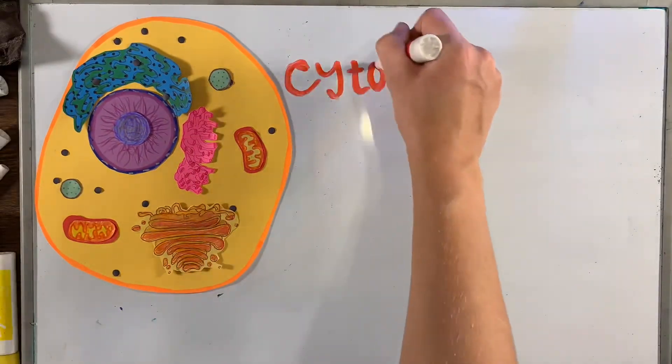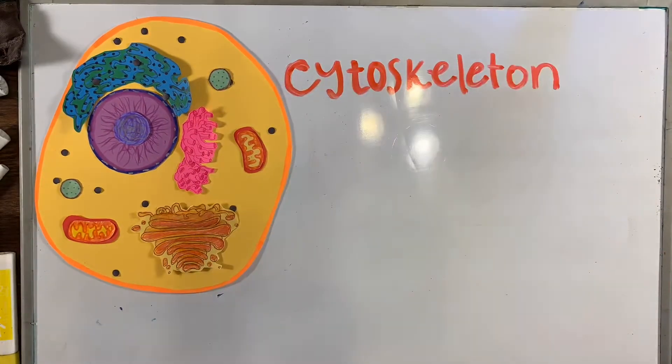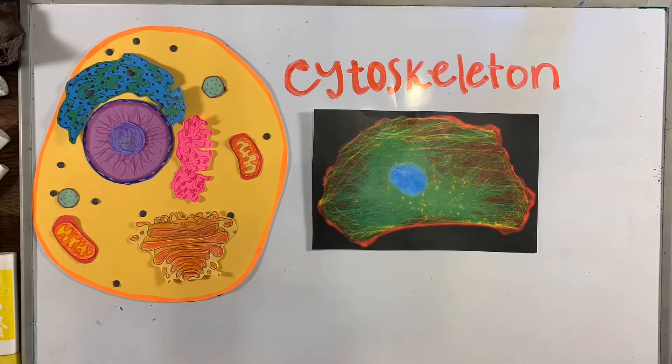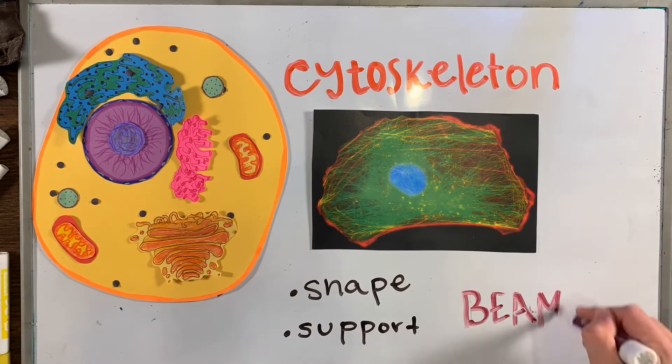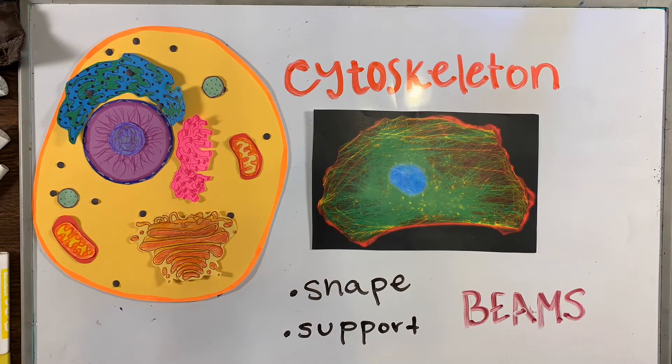The cytoskeleton is a microscopic network of protein filaments which gives the cell its shape and support. This could be like the beams in the walls of a factory holding it all together.